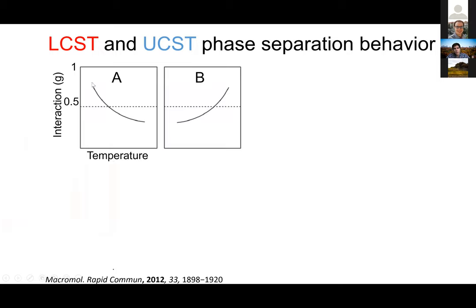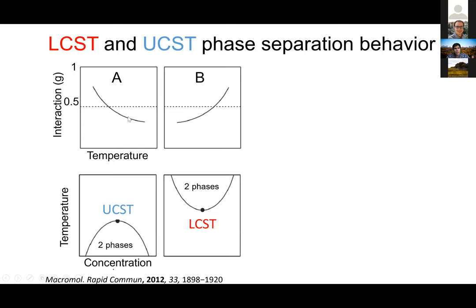For polymer B, if you increase the temperature, the interaction parameter goes up. For polymer A, because the interaction parameter decreases with temperature, you get a phase diagram in which above the UCST, or upper critical solution temperature, there is only one phase — but below that, strong interactions lead to phase separation. The opposite is true for LCST: there is a lower critical solution temperature above which there are two phases, but below that there is only one phase — no phase separation happening.